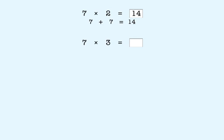To multiply seven by three, you start with two times seven, which is fourteen, and add seven to get twenty-one.